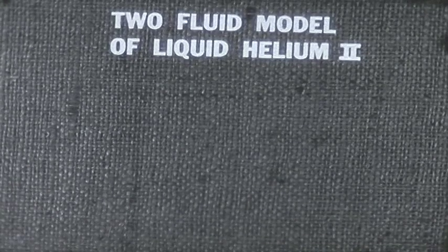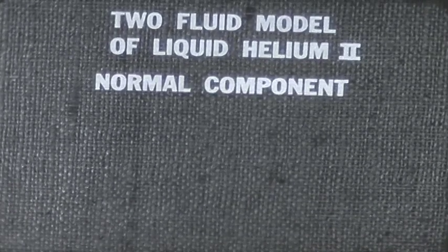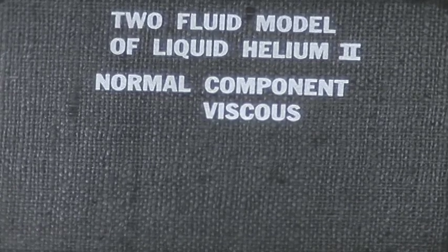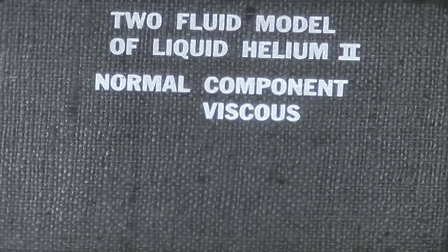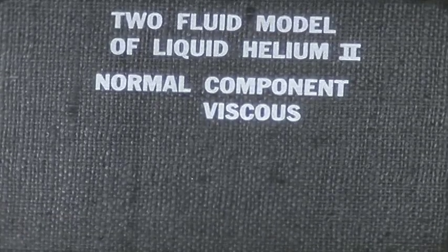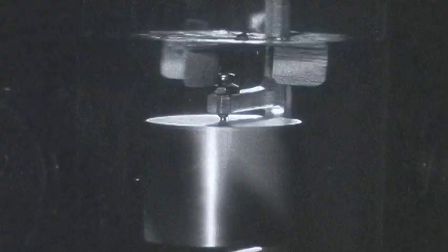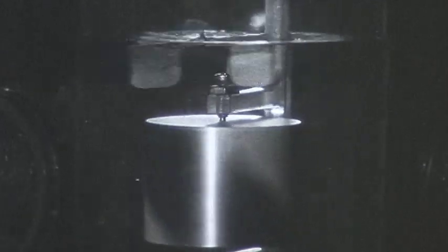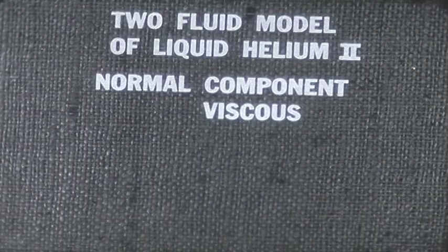We shall call one component normal. It is this component which we hold responsible for the appearance of viscosity below the lambda point in the rotating cylinder experiment. The normal component, as the name suggests, behaves like a normal liquid, and therefore has viscosity. It is the one which the cylinder drags along as it turns. But the normal component cannot flow through the narrow channels of the ceramic disk because of its viscosity.